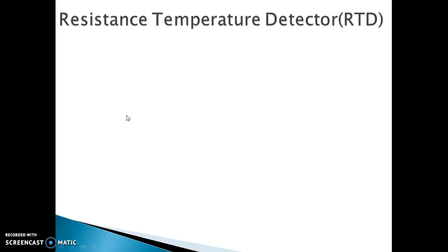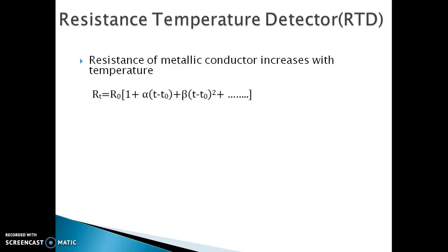The RTD capitalizes on the fact that the resistance of the pure conductor varies with temperature change. To approximate the RTD curve, it is given by the Kalender-Van-Deusen equation.